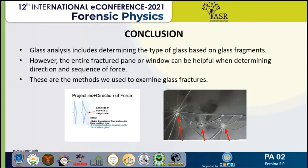In conclusion, glass analysis includes determining the type of glass based on glass fragments. The entire fractured panel or window can be helpful when determining the direction and sequence of force. The oil immersion method is used for examining glass fractures. Thank you.